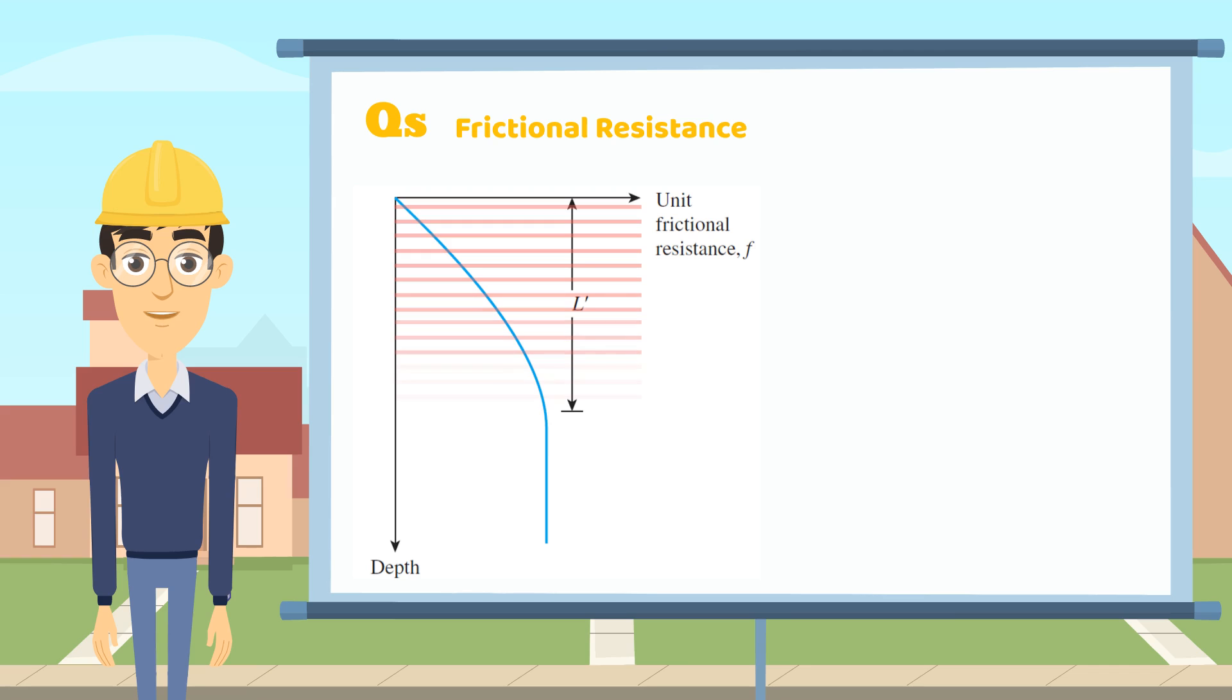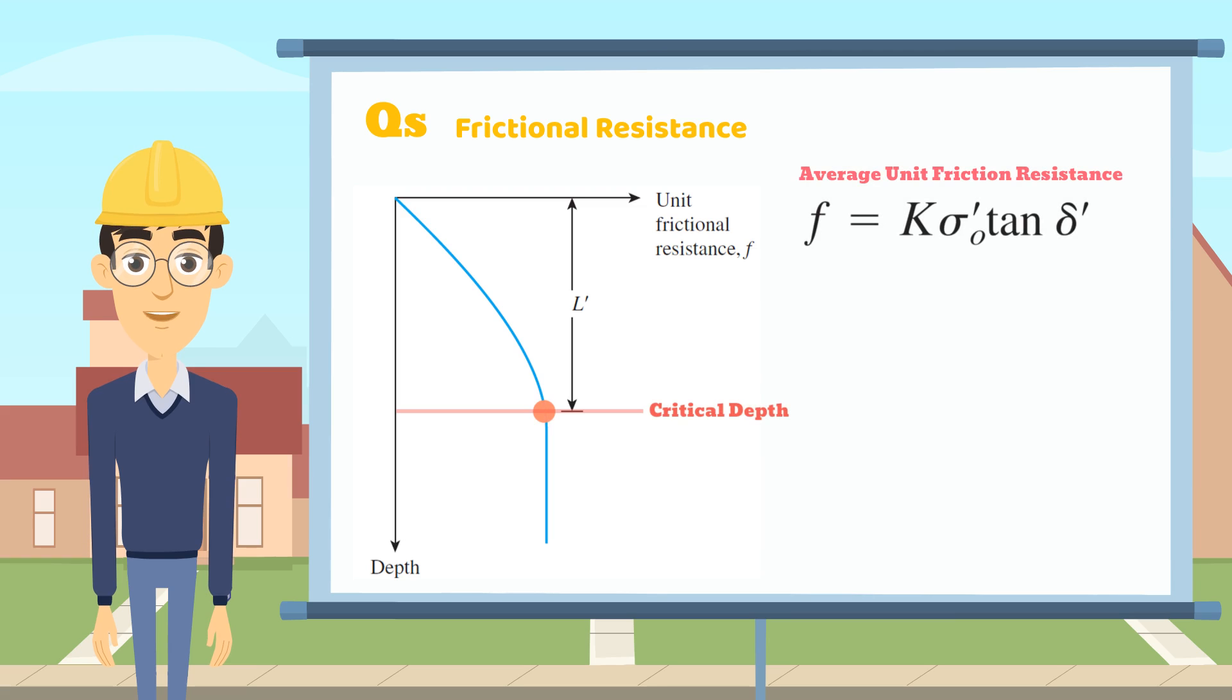How can we determine the variable number of the unit frictional resistance at different depths? In calculation, we can easily calculate the f value at the critical depth by using this equation to estimate the average value from ground level to the L' level.